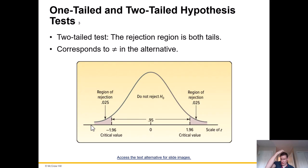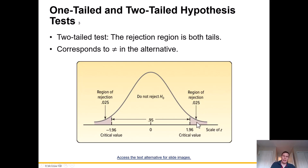In a two-tailed test, the rejection region is in both tails — this corresponds to a 'not equal to' sign in the alternative hypothesis. For example, with a significance level of 0.05, each tail has a rejection region of 0.025. The critical values are negative 1.96 on the left and positive 1.96 on the right, meaning the Z score must be either below negative 1.96 or above positive 1.96 to fall into the rejection region.